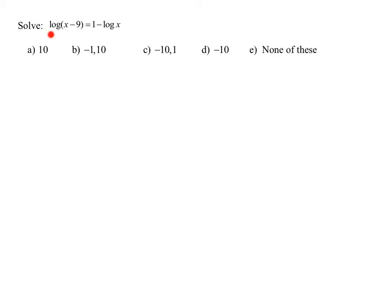We have the common log of x minus 9 is 1 minus the common log of x. So I have two log expressions and I have one number. This is the type of log equation where not every single term is a log.